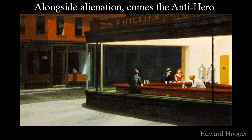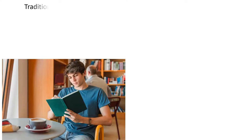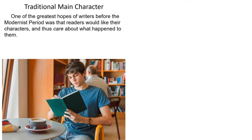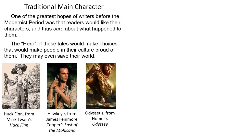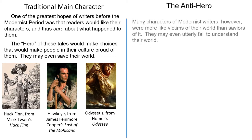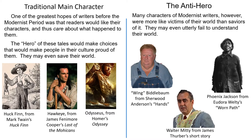From alienation comes the anti-hero. One of the greatest hopes of writers before the modernist period was that readers would like their characters and thus care about what happens to them — if they care, they'll keep reading. The hero of these tales would make choices that would make people in their culture proud of them; they may even save their world. Think of Huck Finn, Hawkeye, Odysseus. The anti-hero is different: many characters of modernist writers were more like victims of their world than saviors of it. They may even utterly fail to understand their world. Think of Wing Biddlebaum from Sherwood Anderson's 'Hands.'